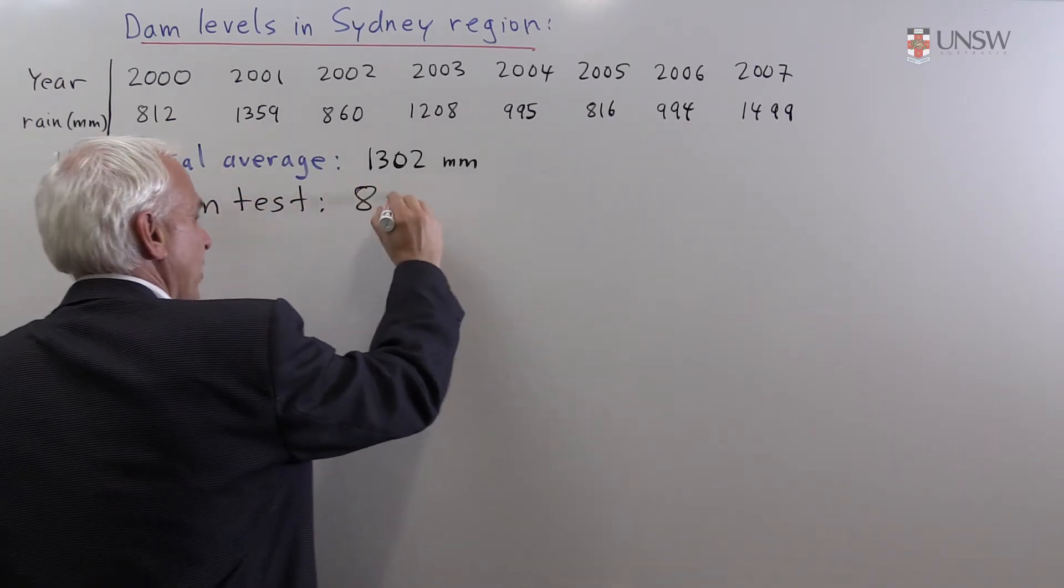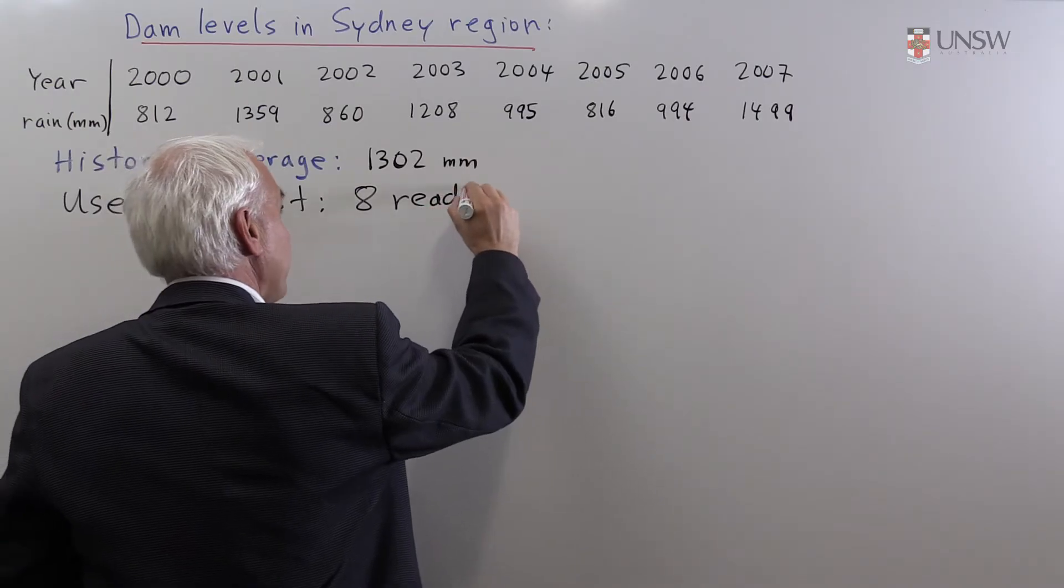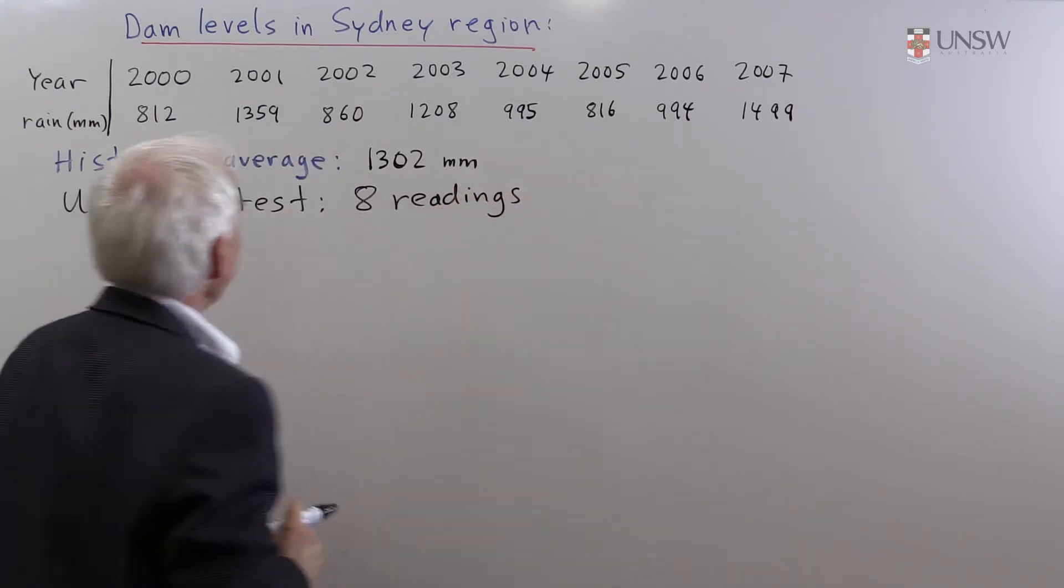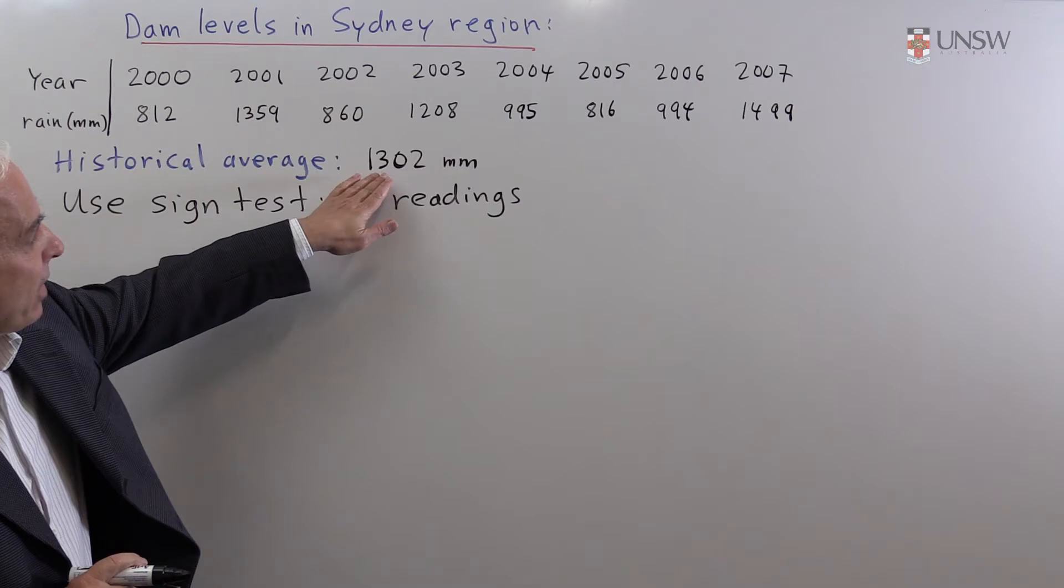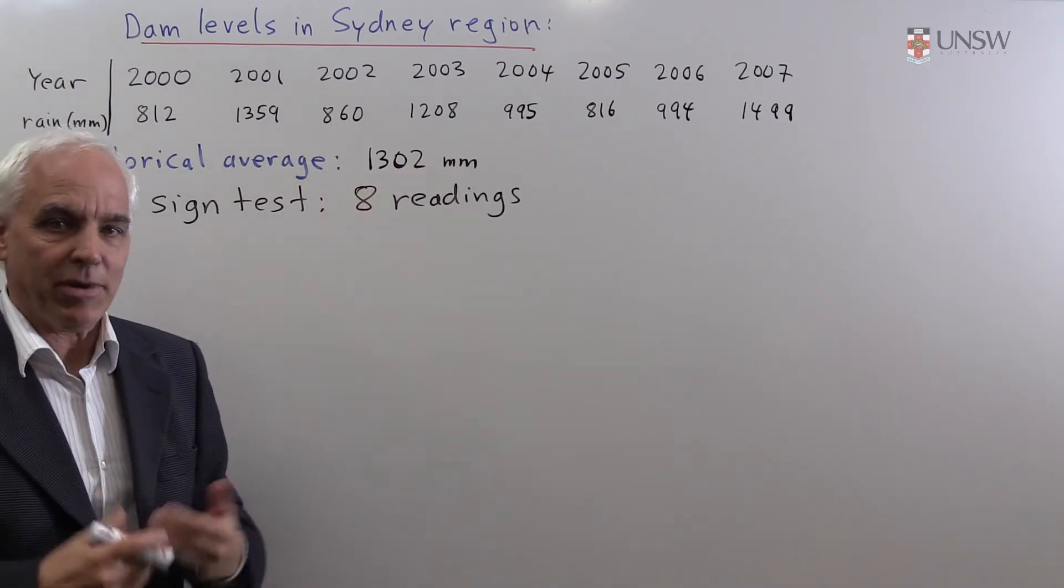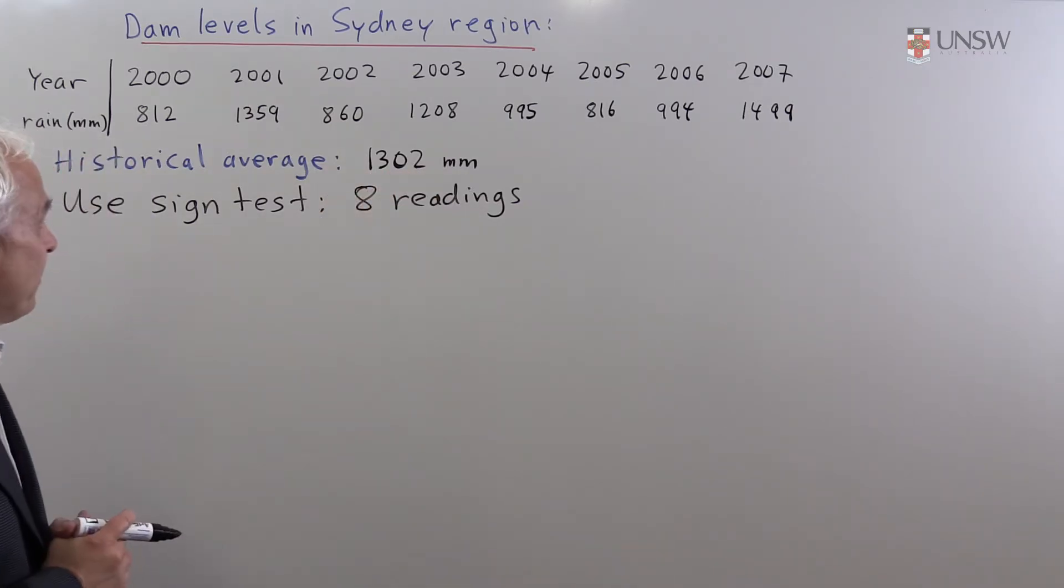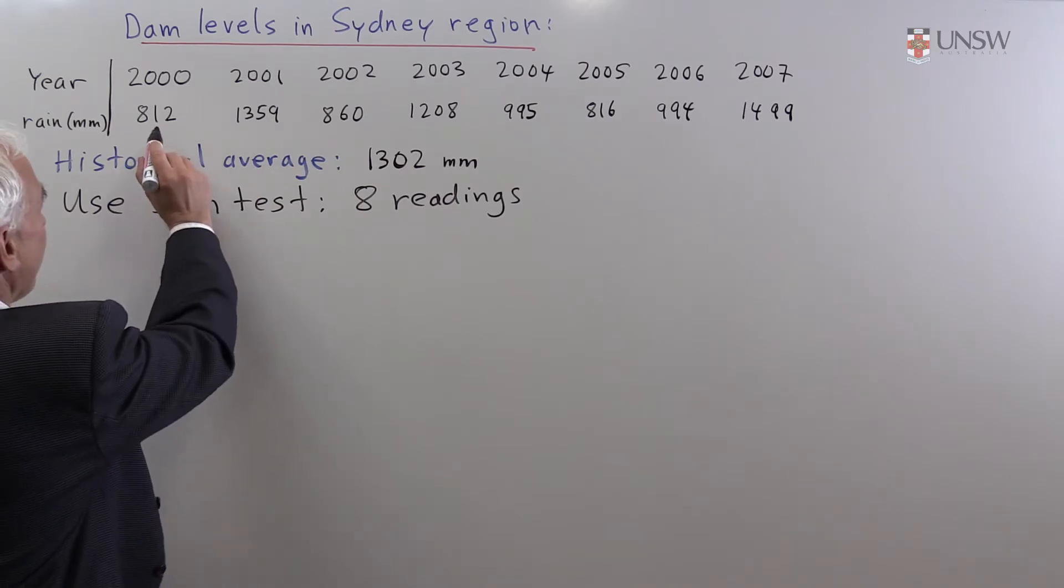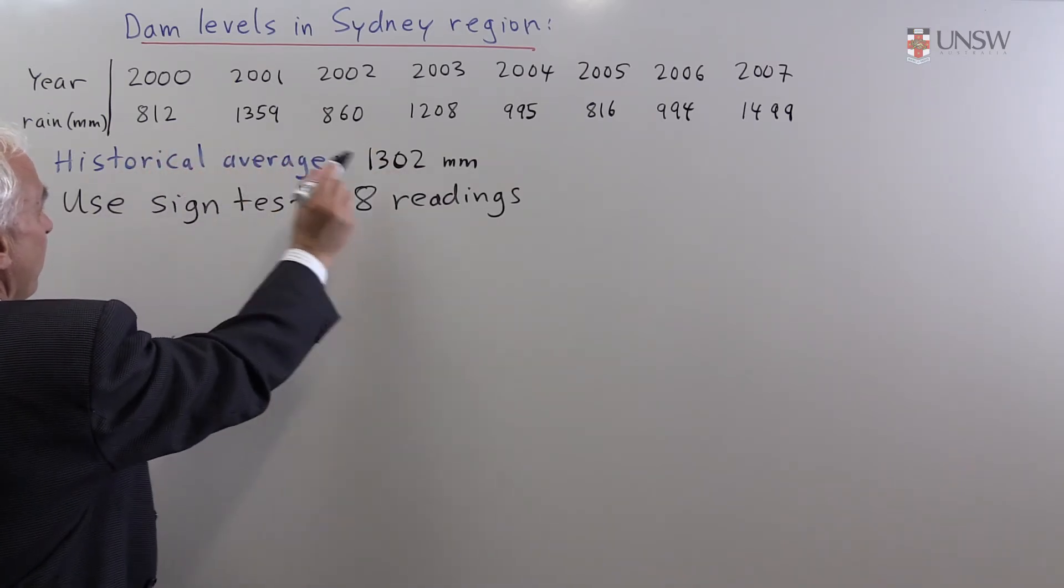So we have eight readings. And from these eight readings, we have a look to see how many of them are above and how many of them are below this long-term average. So let's just put a little pluses and minuses along them. So comparing to 1300,